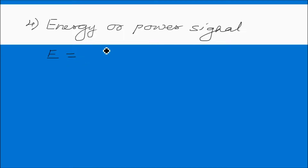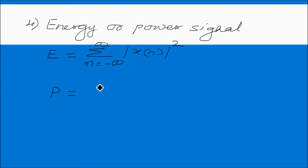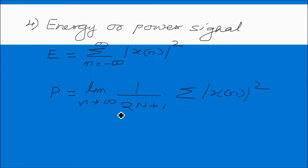The fourth type is energy or power signal. The energy is calculated as E = summation from n = −∞ to ∞ of |x(n)|². The power is calculated as P = limit as N tends to infinity of (1 / (2N+1)) times summation from n = −N to N of |x(n)|². These are the formulas for calculating energy and power.